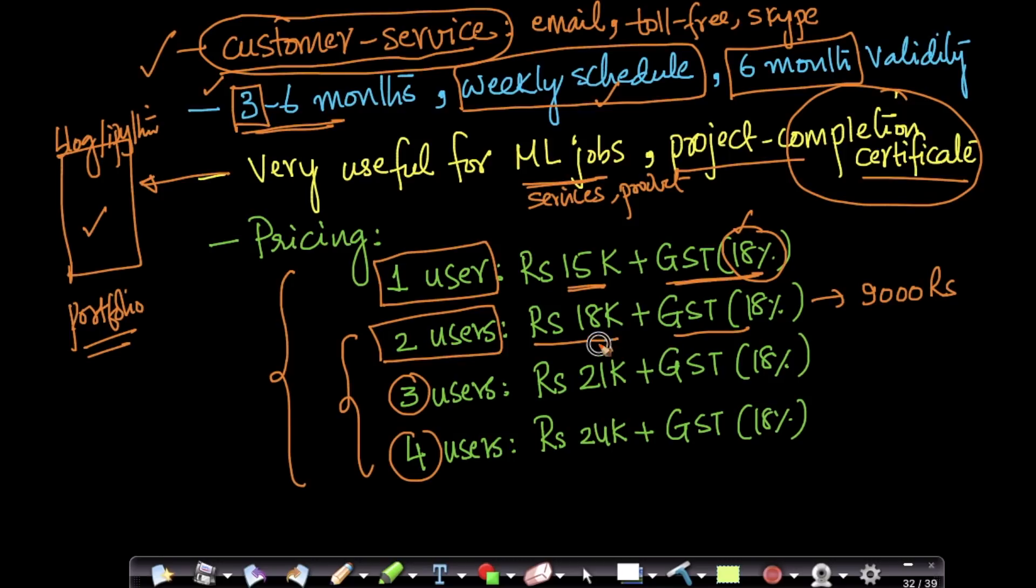For three students, we give it at 21,000 rupees. This comes to about 7,000 rupees per student plus GST. For a group of four students, we give it at 24,000 rupees, which comes to roughly about 6,000 rupees per student plus GST.